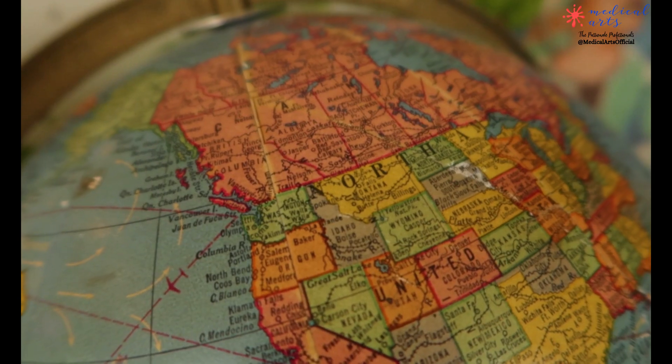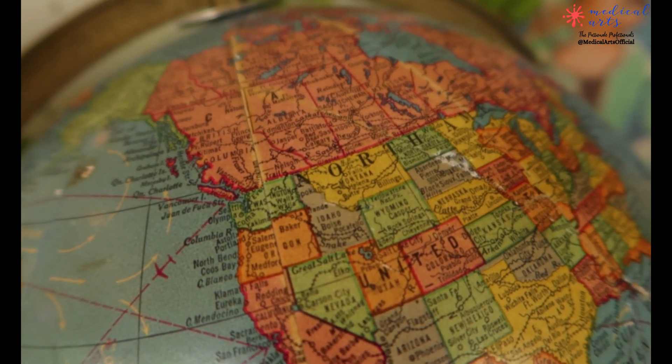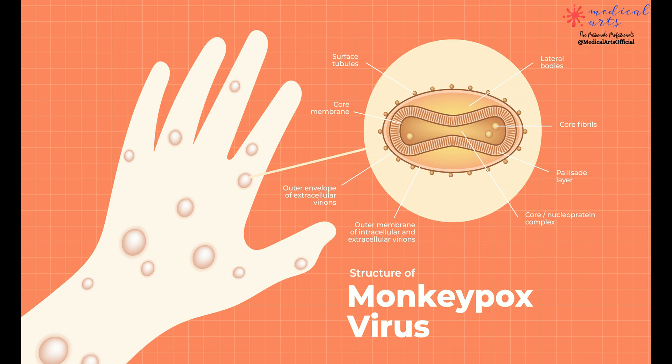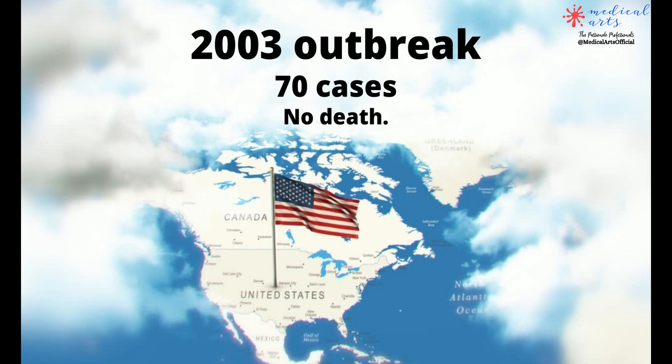The first outbreak of human monkeypox infection in the Western Hemisphere occurred in 2003, when more than 70 cases were reported in the United States. Nine patients were hospitalized, and there were no deaths.